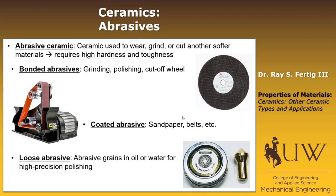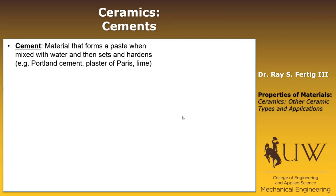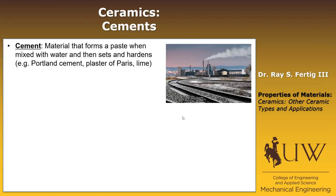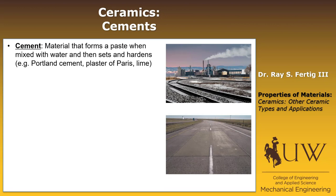The final category of ceramics is cements. A cement is a material that forms a paste when mixed with water, then sets and hardens. Examples include Plaster of Paris, lime, and the most famous — Portland cement. There's a cement plant just south of Laramie, making it locally relevant. Portland cement is important as the primary ingredient in every house foundation and highway road surface — a very high-volume use.